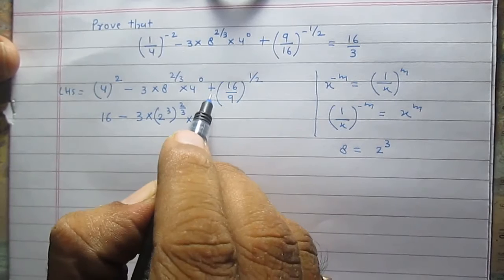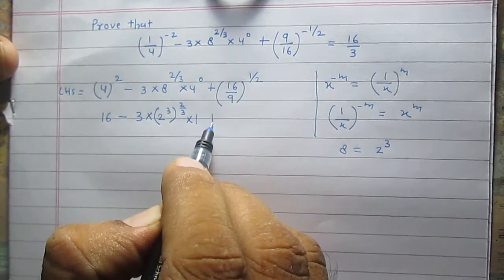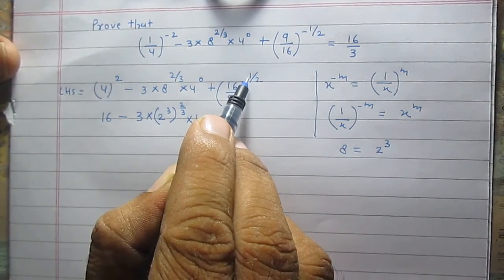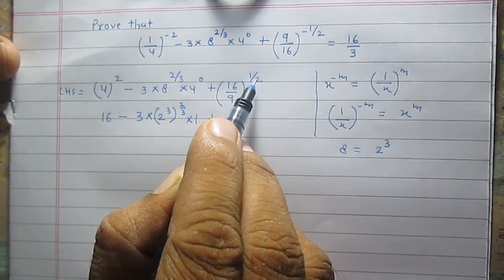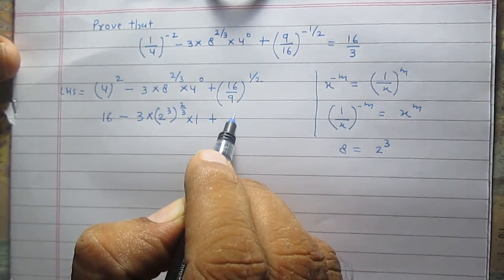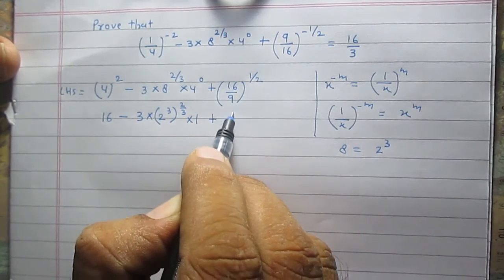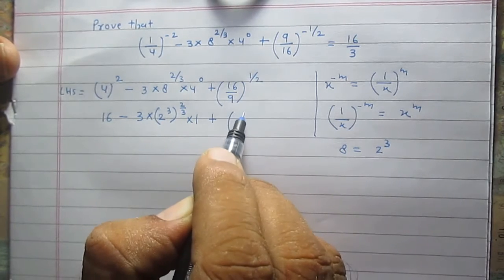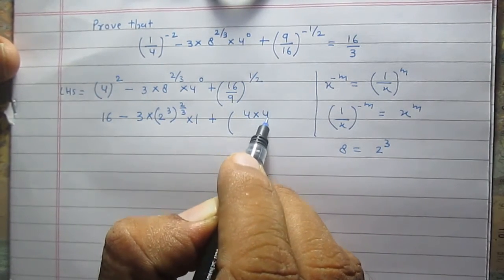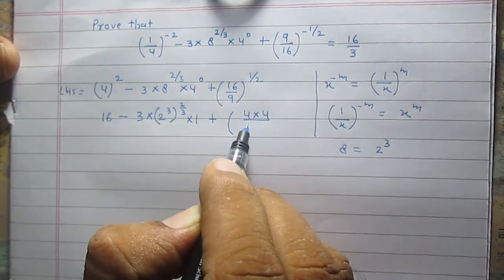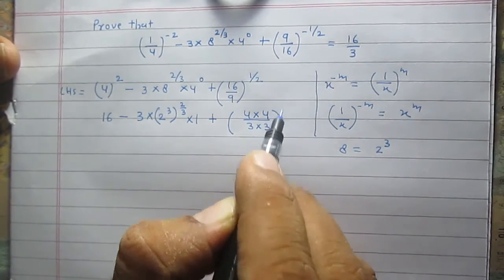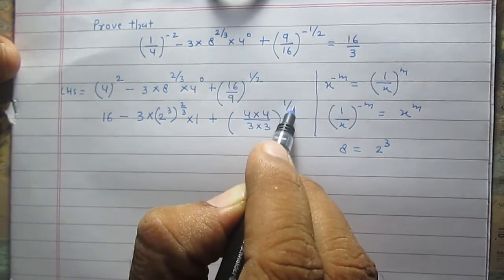The next part is plus (16/9) raised to the power 1/2. We can write 16 as 4 multiplied by 4, and 9 as 3 multiplied by 3, giving us (4/3) squared, raised to the power 1/2.